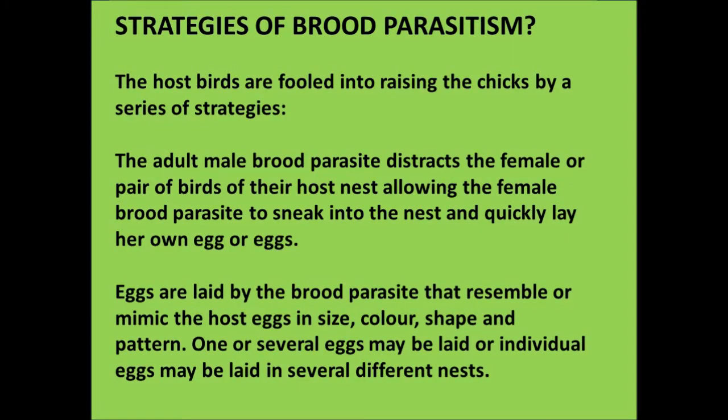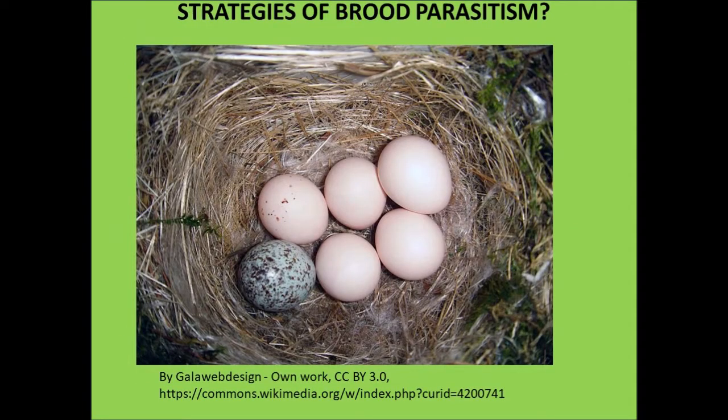What are the strategies of brood parasitism? The host birds are fooled into raising the chicks by a series of strategies. The adult male brood parasite distracts the female or pair of the host nest, allowing the female brood parasite to sneak into that nest and quickly lay her own egg or eggs. Eggs are laid that resemble or mimic the host eggs in size, color, shape, and pattern. One or several eggs may be laid, or individual eggs may be laid in several different nests. Here is an example of a host nest with the host brood and a parasitic cuckoo egg.